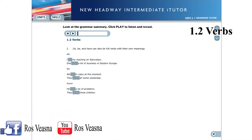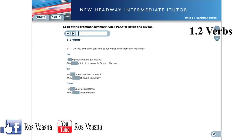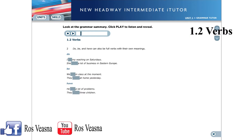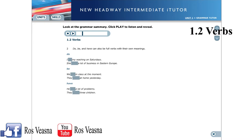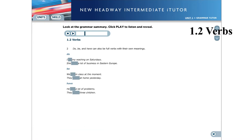Do, be, and have can also be used as full verbs with their own meanings. Do: I do my washing on Saturdays. She does a lot of business in Eastern Europe.